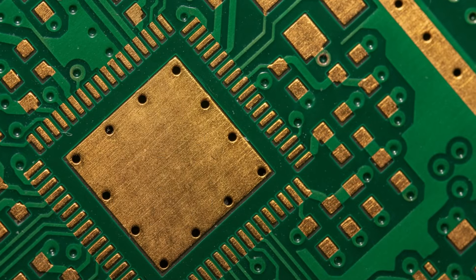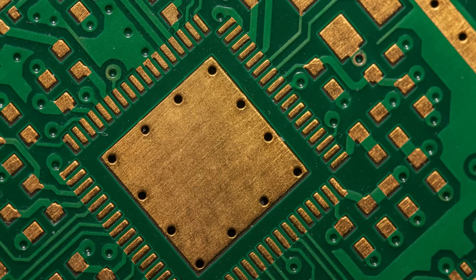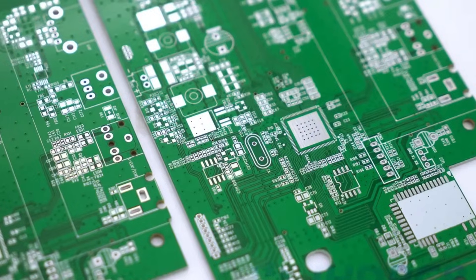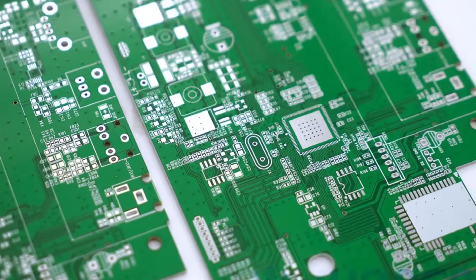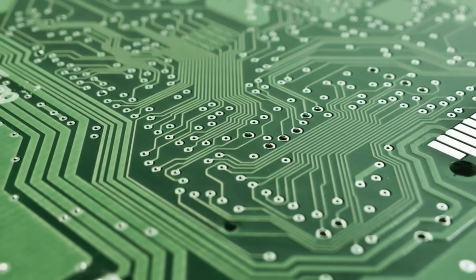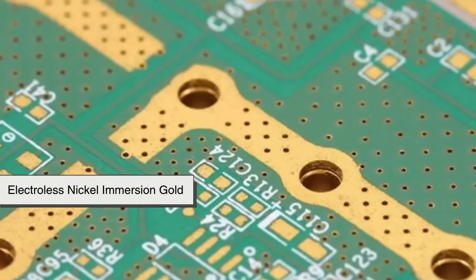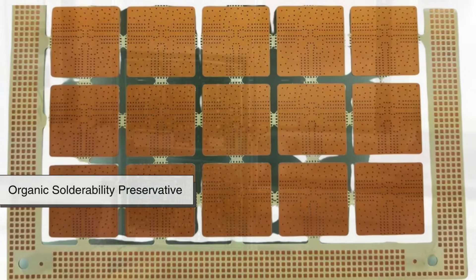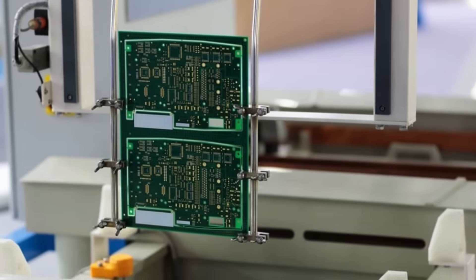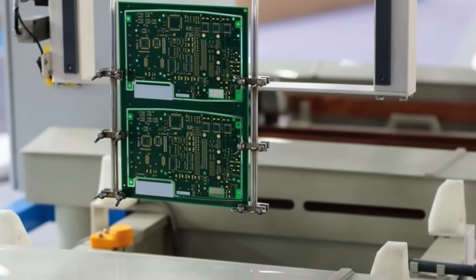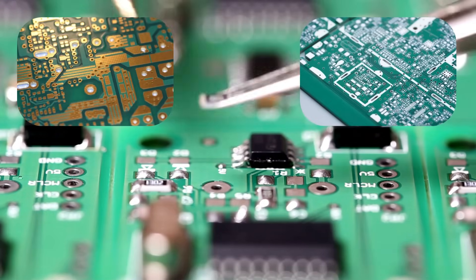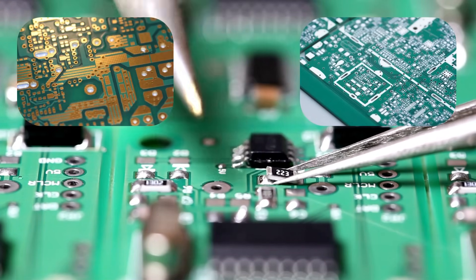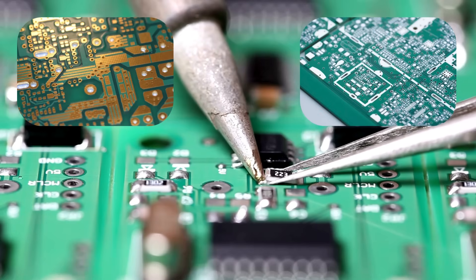Before components can be added, the exposed copper pads need to be protected and prepared to accept solder. This is where surface finishes come in. Common finishes include hot air solder leveling, electroless nickel immersion gold, and organic solderability preservative. Each has its pros and cons depending on cost, performance, and application. The chosen finish is applied to all exposed pads, ensuring good solderability and long-term protection against corrosion.